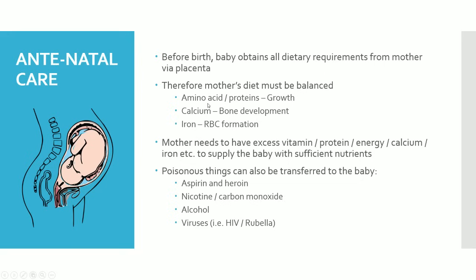It's very important for the mother to control herself during the development of the fetus. The mother's diet has to be quite balanced — proteins for the growth of the fetus, calcium mainly for bone development, and iron which is crucial for the fetus's red blood cell development. You also have to be quite careful, because poisonous things can also be transferred to the baby, including aspirin, heroin, nicotine, carbon monoxide, alcohol, and even viruses. So it takes extreme care to make sure that fetal development is happening smoothly.